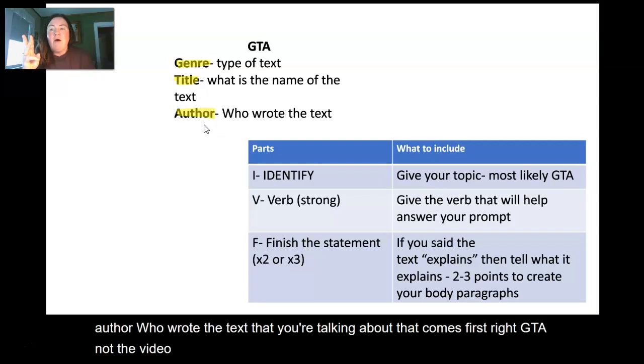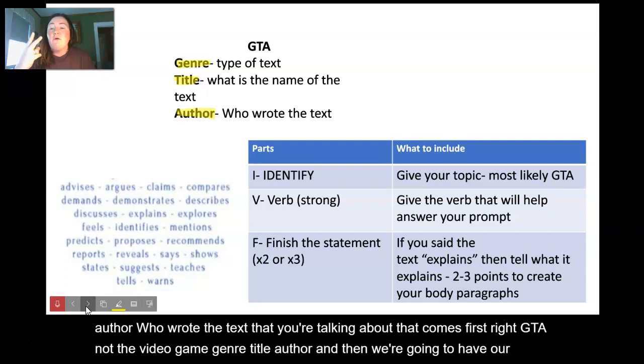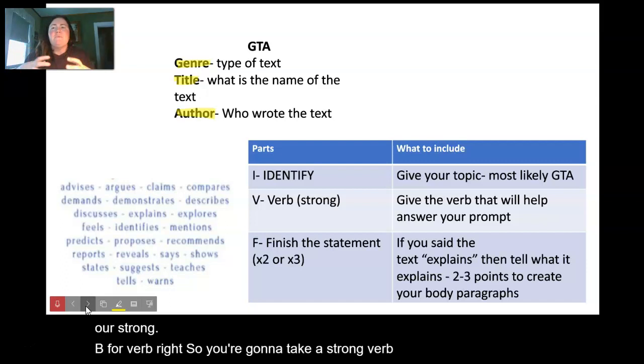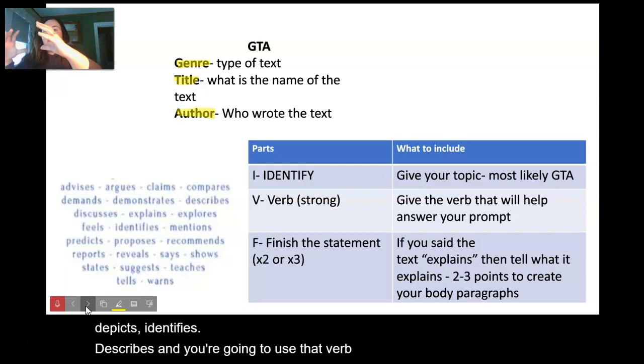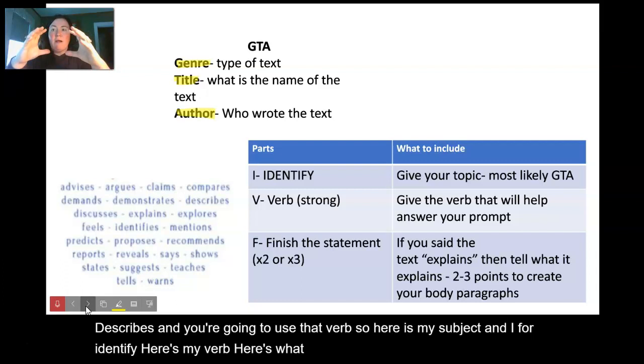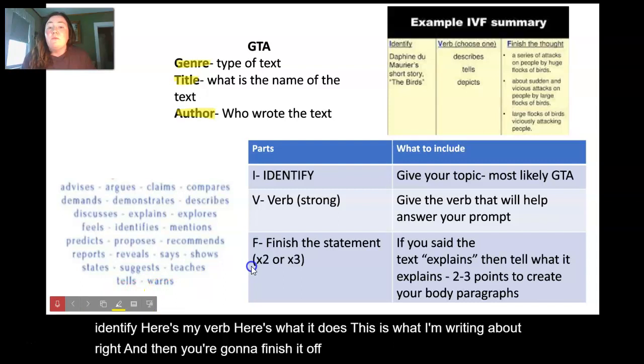That comes first - GTA, not the video game: genre, title, author. Then we're going to have our strong V for verb. So you're going to take a strong verb like claims, expresses, depicts, identifies, and you're going to use that verb. So here's my subject in I for identify, here's my verb, here's what it does, this is what I'm writing about.